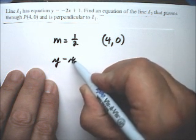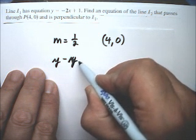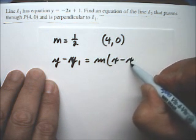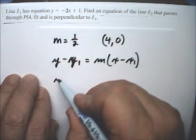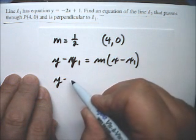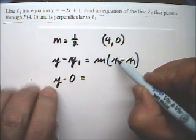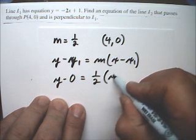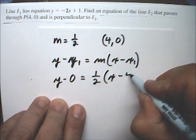y minus y1 equals m times x minus x1. So y minus 0 equals one-half times x minus 4. So that's the equation of the line.